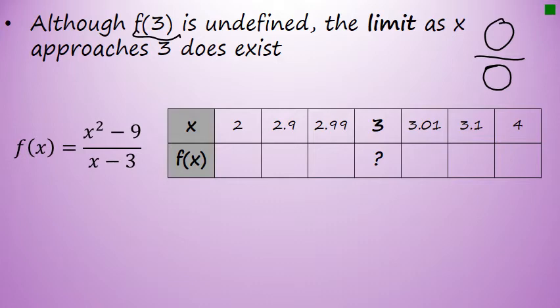To evaluate a limit numerically, set up a table that has the value you're evaluating the limit for in the middle, then values just a little bit smaller than that on the left, and values a little bit bigger than that to the right. In this table, below 3 I have 2.99, 2.9, and 2, and to the right I have 3.01, 3.1, and 4.